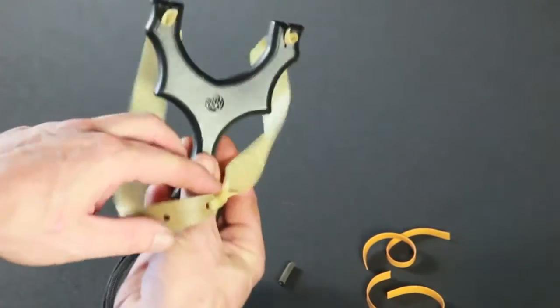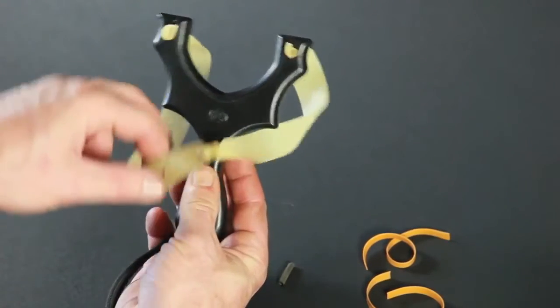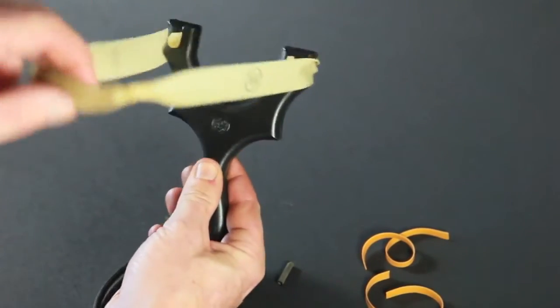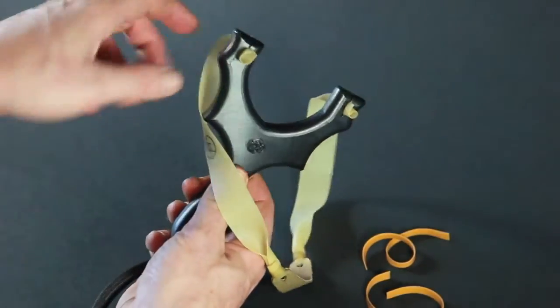The way it's intended to be shot is that these tabs will be facing you, the shooter, and the bands will come around the outside of the slingshot, nestling into these grooves here.